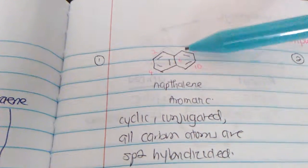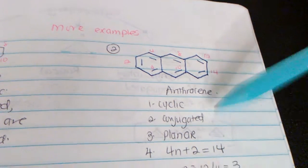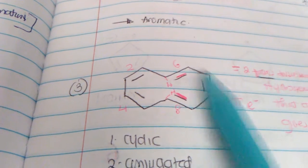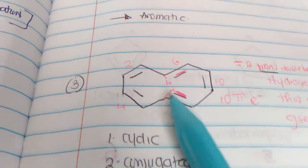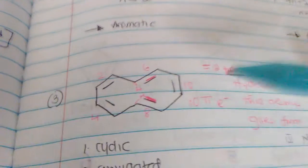More examples: naphthalene has 1, 2, 3, 4, 5 — 10 electrons — and is aromatic. Anthracene has 1, 2, 3, 4, 5, 6, 7 — 14 electrons — and is planar, conjugated, cyclic, so it's aromatic. A similar-looking compound that has 2 hydrogens at the bridging carbon is not conjugated at that position, so it's not aromatic. If a CH3 bridge were connecting it instead, that would make it aromatic.